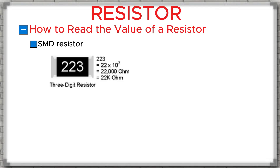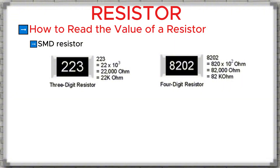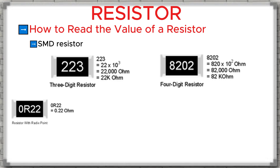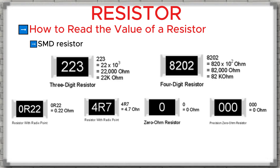Now let's look at some examples. Here we have a three-digit SMD resistor marked as 223. We take 22, then add three zeros — that gives us 22,000 ohms, or 22 kilo-ohms. Next, a four-digit SMD resistor marked as 8222. We take 822, then add two zeros — that gives us 82,200 ohms, or 82.2 kilo-ohms. There are also SMD resistors with small values: 0R22 means 0.22 ohms, 4R7 means 4.7 ohms, and a marking of 0 or 000 means 0 ohms.